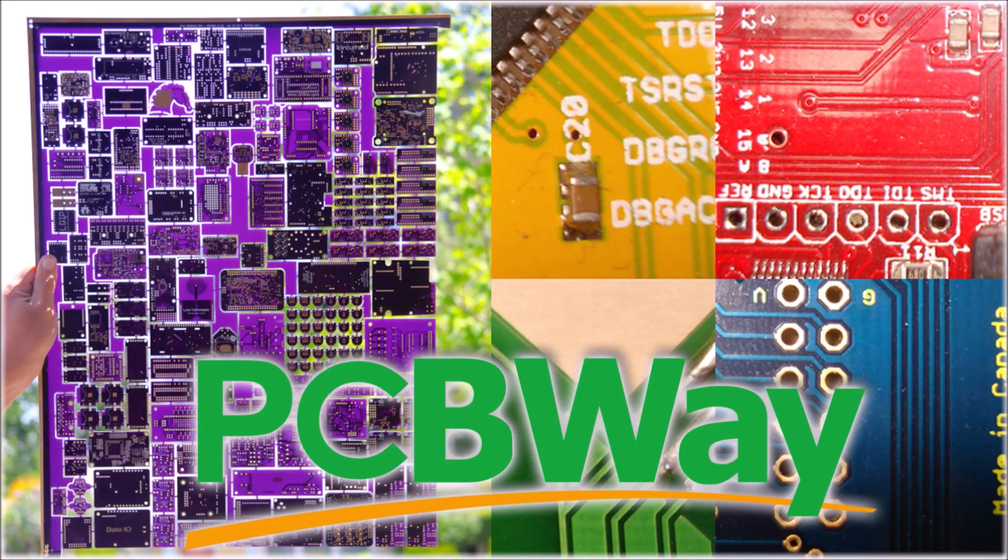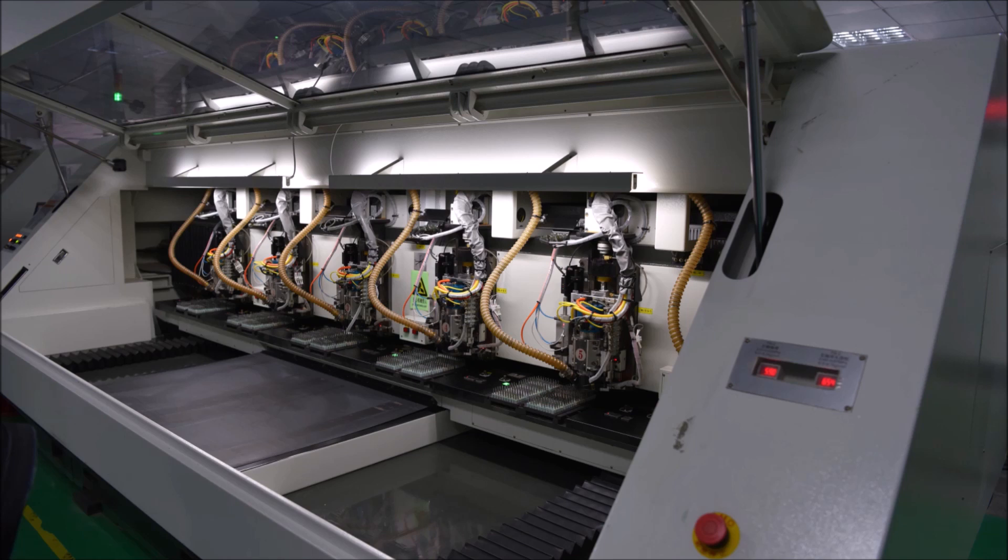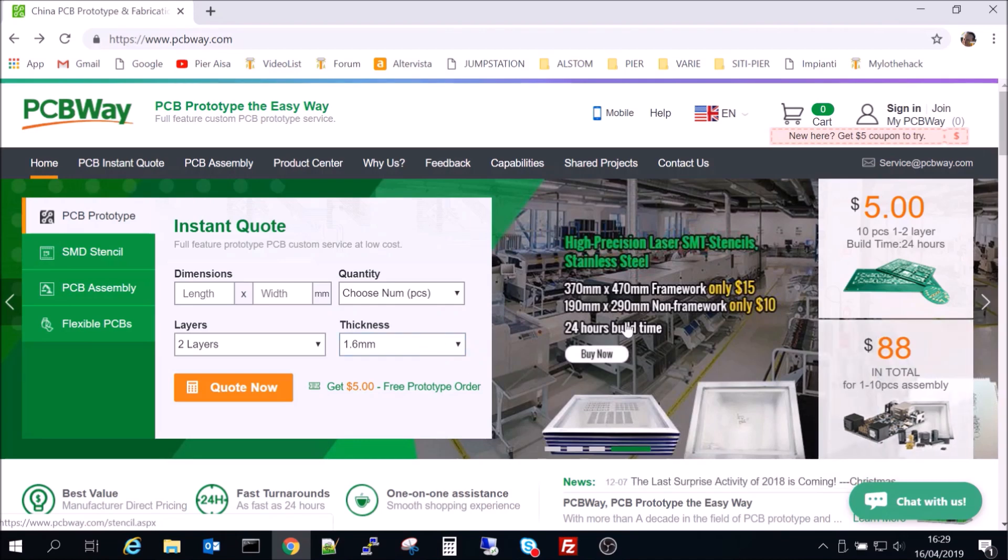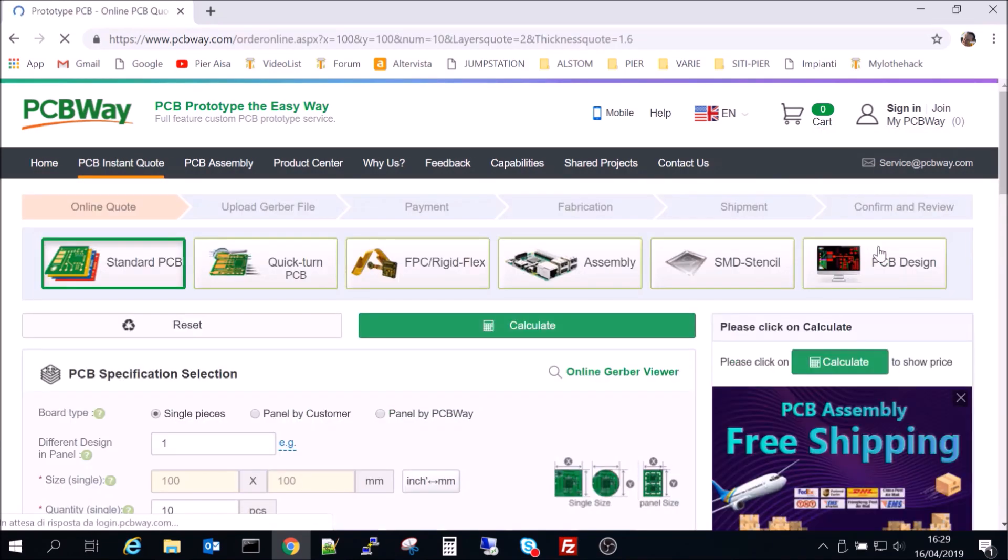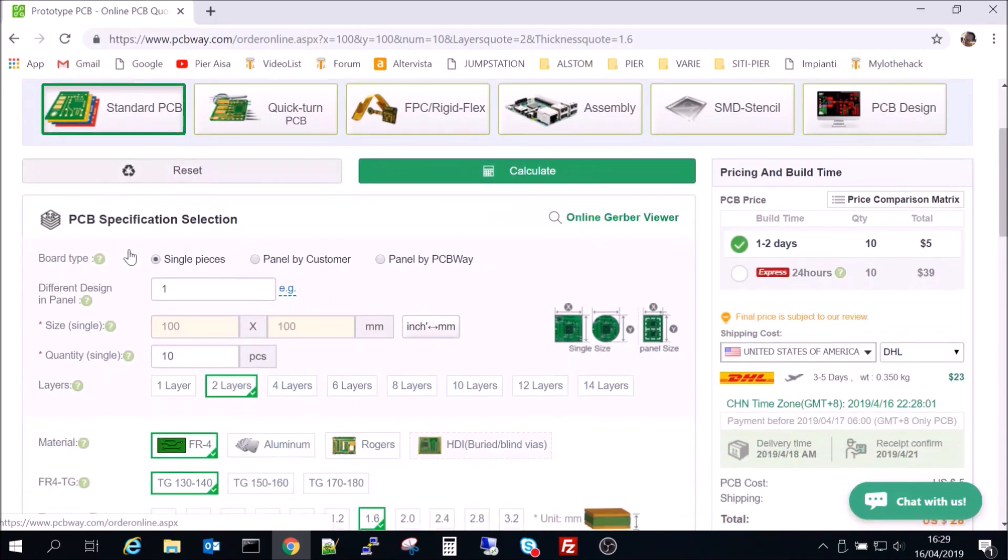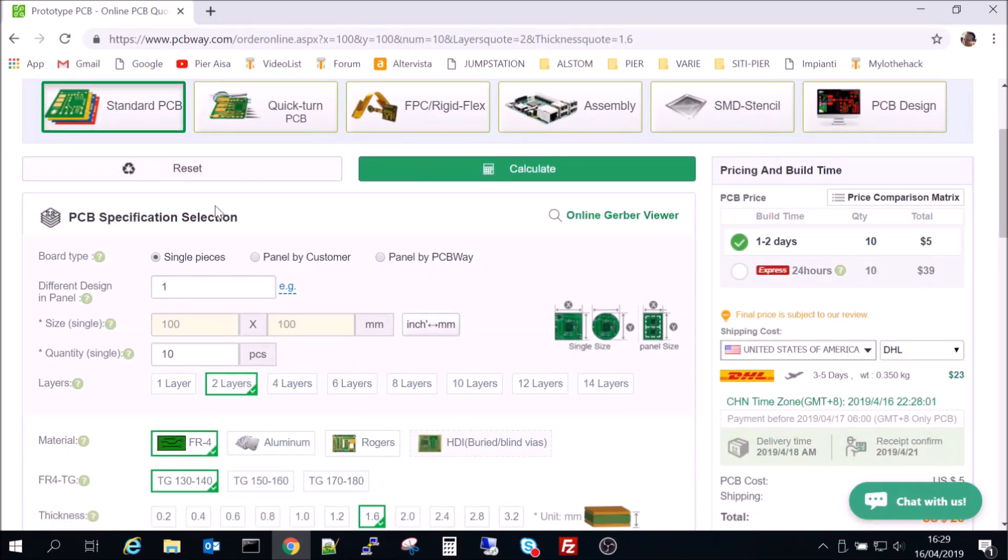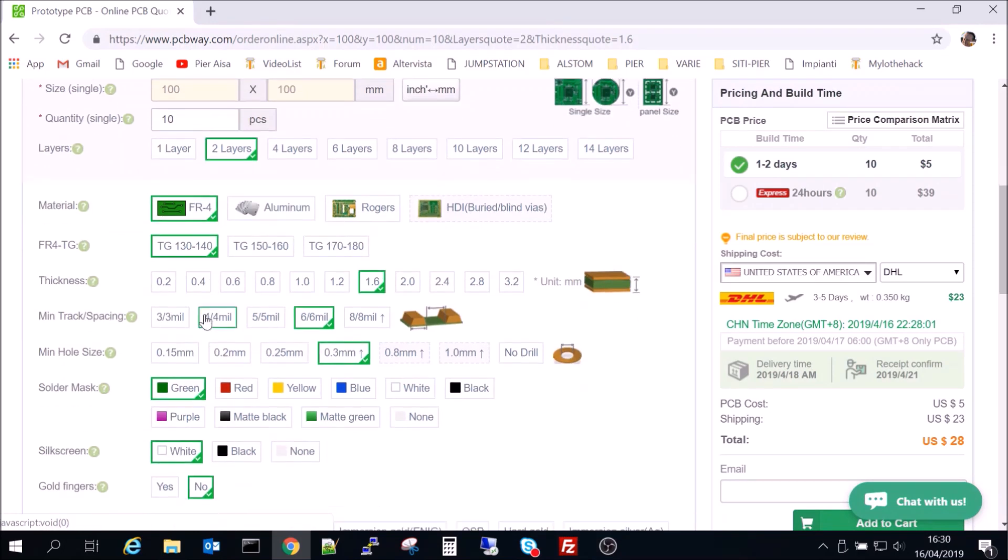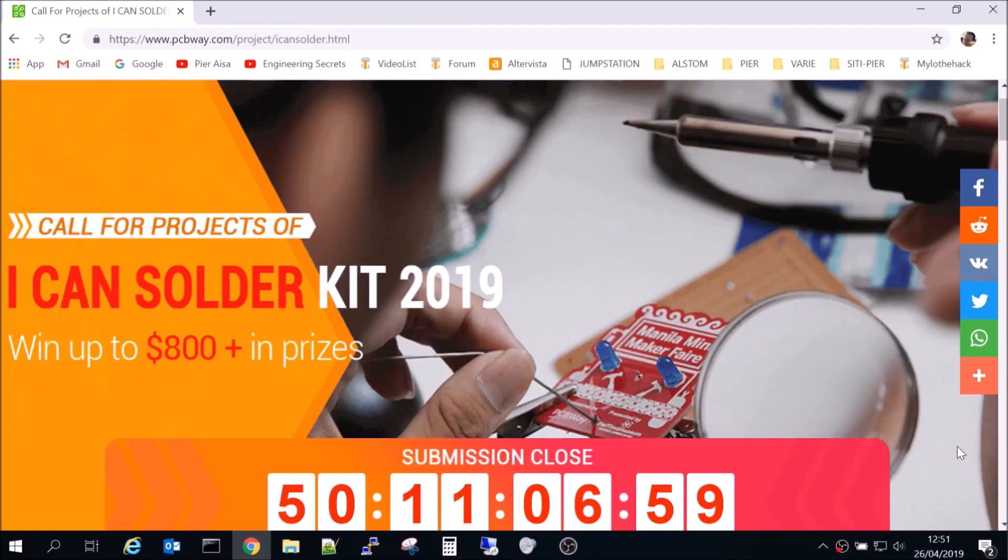This video is sponsored by PCBWay, a leading company specialized in the manufacturing of professional PCBs. New customers that register on PCBWay site get 10 PCBs two layers for free. The build time is only 24 hours with a typical shipping time from one to three days. Upload your Gerber files on the site, check the technical specification for manufacturing, then just wait. Subscribe to the ICANN SOLDER TIT 2019 and win up to $800 in prizes.